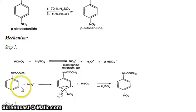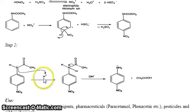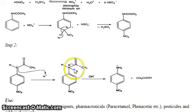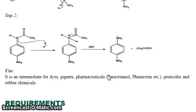The mechanism involves formation of the electrophilic nitronium ion, followed by its attack at the para position to form paranitroacetanilide. In the second step, H+ attacks the acetamido group, breaking the bond and forming paranitroaniline.